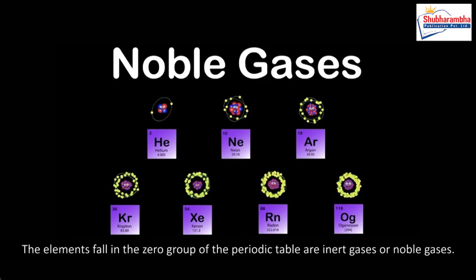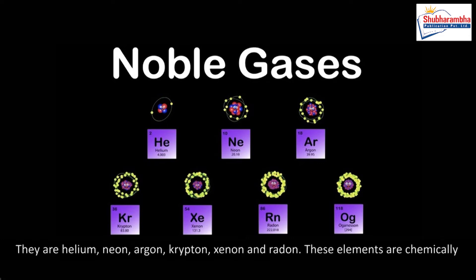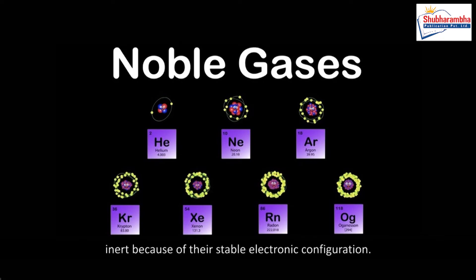Inert gases. The elements that fall in the zero group of the periodic table are inert gases or noble gases. They are helium, neon, argon, krypton, xenon, and radon. These elements are chemically inert because of their stable electronic configuration.